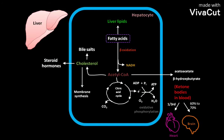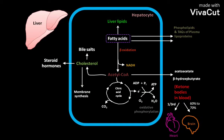Fatty acids are converted to phospholipids and triacylglycerols (TAGs) of plasma lipoproteins. Some fatty acids are transported into the blood and are considered free fatty acids. These free fatty acids in the blood are bound to serum albumin and carried to the heart and skeletal muscle.